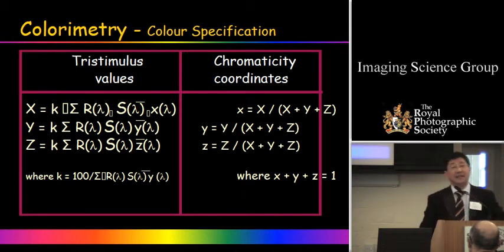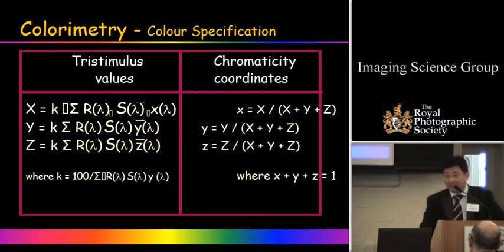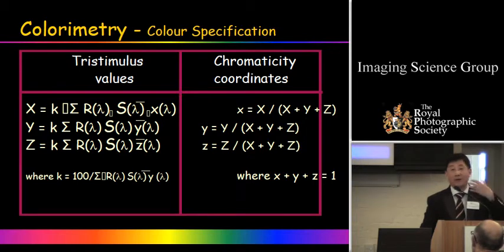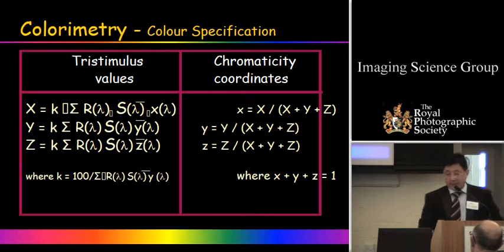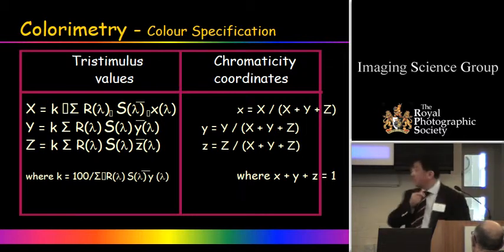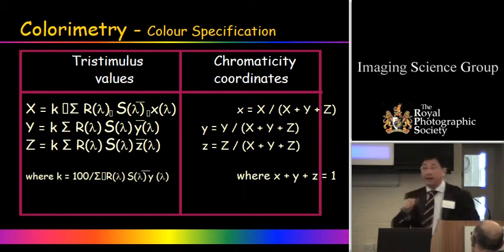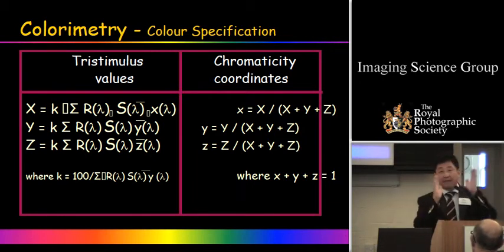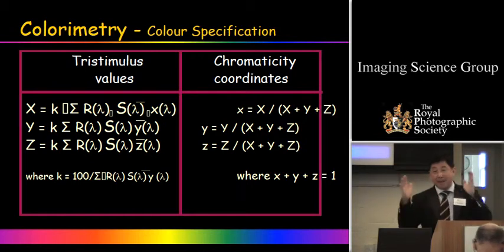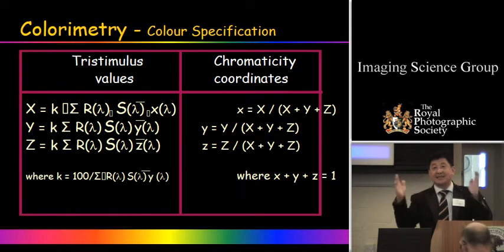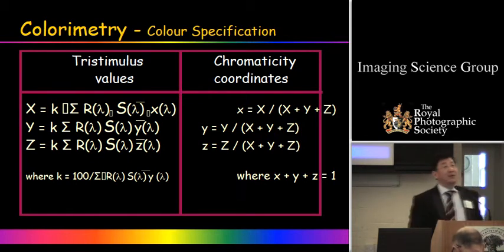So we have these XYZ values, but we don't understand the meaning of them. We need a color map — we need to present these colors in what we call a color space. In 1931 and 1964, CIE produced two color systems. Basically, we can provide chromaticity coordinates together with capital Y — the tristimulus or luminance factor — which gives us the lightness dimension. So all colors can be plotted and their relationships understood.